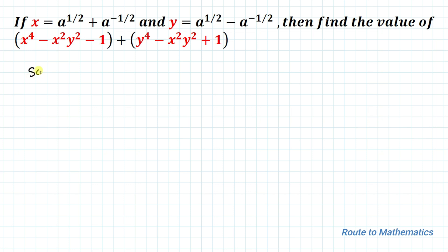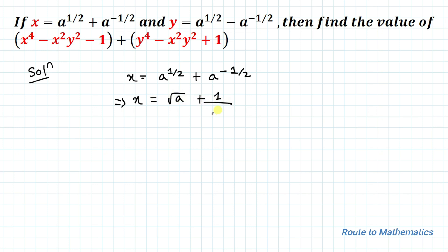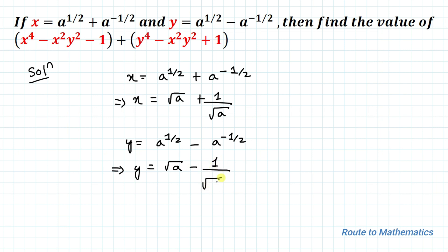So without any delay let's start the solution. We have x equals to a to the power 1/2 plus a to the power minus 1/2, which we can write as x equals to √a plus 1/√a, since a negative power means the reciprocal. Similarly, y equals to a to the power 1/2 minus a to the power minus 1/2, so we can write y equals to √a minus 1/√a.